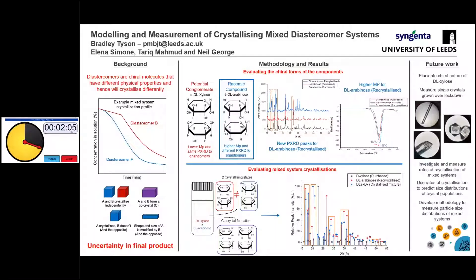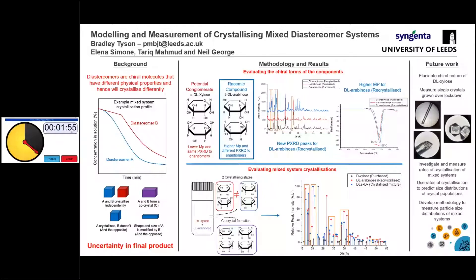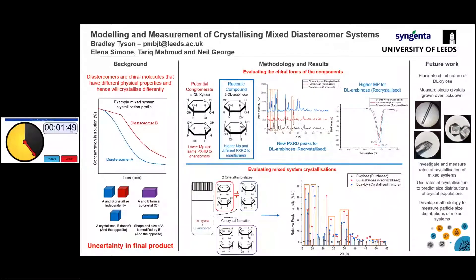We can either form a conglomerate or a racemic compound. If we take the xylose on the left, one of our components, we can see that it forms a potential conglomerate. This is supported by the evidence that it has a lower melting point, and also the powder X-ray diffraction pattern is the same as its pure enantiomers, as it only consists of its components.